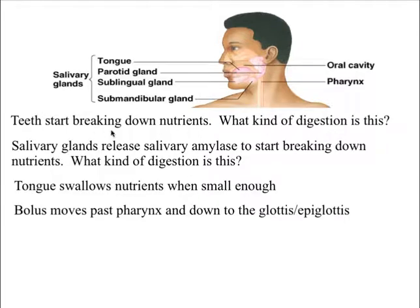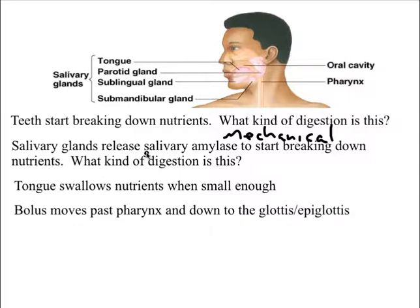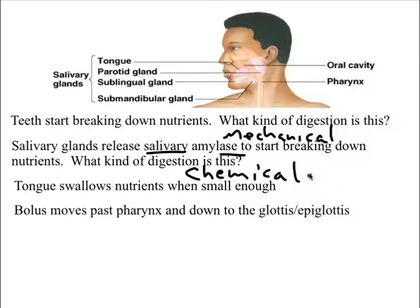When our teeth break things down, that's mechanical digestion. The salivary glands in our oral cavity release salivary amylase — anything ending in '-ase' is an enzyme — to start breaking down nutrients. When salivary amylase, an enzyme, breaks things down, that's chemical digestion.